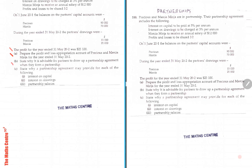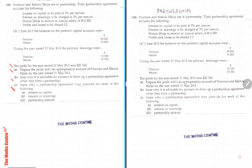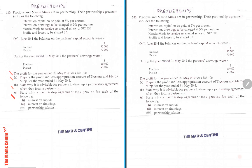It is advisable for partners to draw up a partnership agreement when they form a partnership. A partnership agreement may provide for each of the following: interest on capital, interest on drawings, and partnership salaries. At this point, you can pause the video, take out pen and paper and attempt this question yourself. Having done that, you can resume the video and compare your solutions with mine.